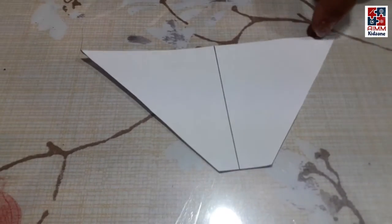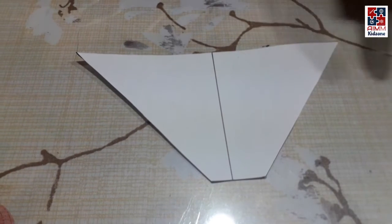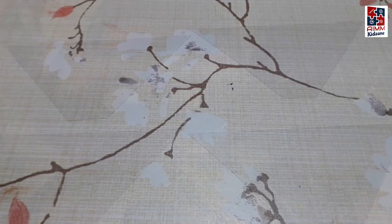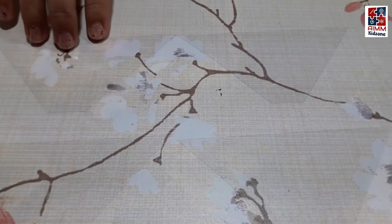Our trapezium shape is ready and we are going to cut 4 similar pieces out of this clear sheet. I am done cutting these four trapeziums and I am going to show you how they look.